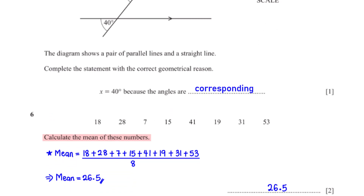Calculate the mean of these numbers. The mean of the numbers is the sum of the numbers divided by the count of numbers in the list, which is 8. When we type this into the calculator we get 26.5.